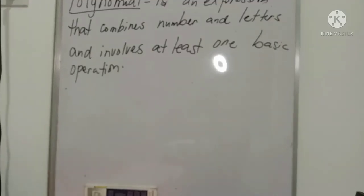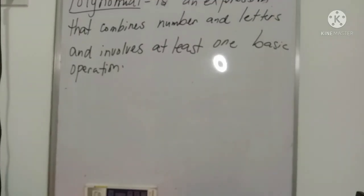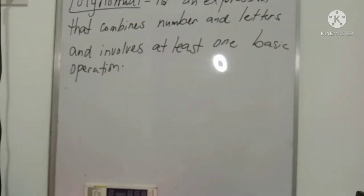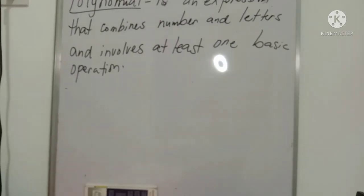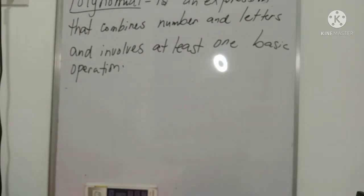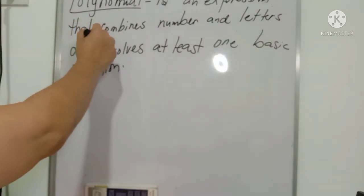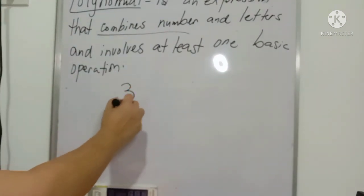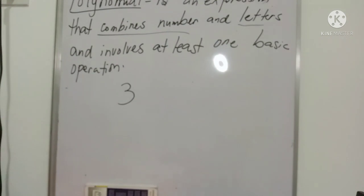Let us define what is a polynomial. A polynomial is an expression that combines numbers and letters and involves at least one basic operation. We know that there are four fundamental operations: addition, subtraction, multiplication, and division. When we talk about combining numbers and letters, the letters from A up to Z are what we call variables.